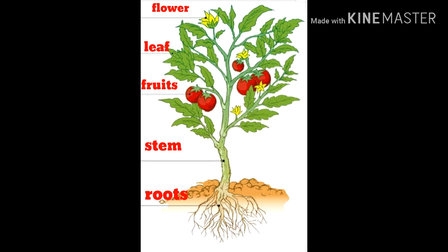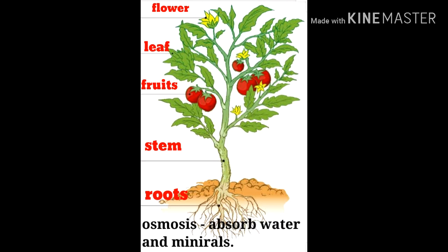So how can water, minerals, and food be transported to all parts of the plant? First, roots absorb water and minerals from the soil. Roots use osmosis to absorb water and minerals. There are two transport systems: number one is xylem.